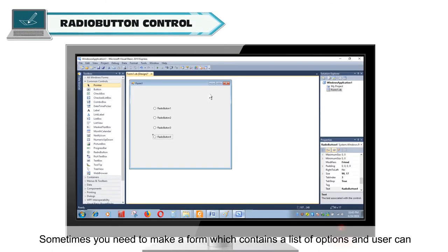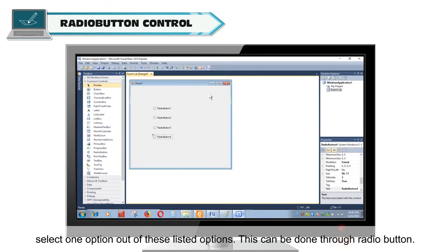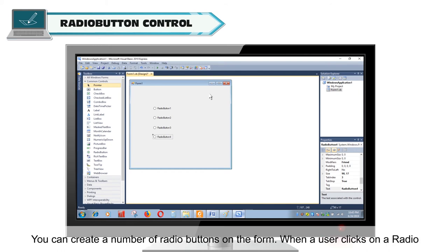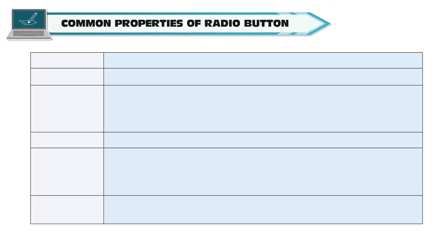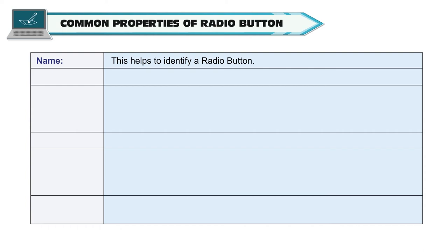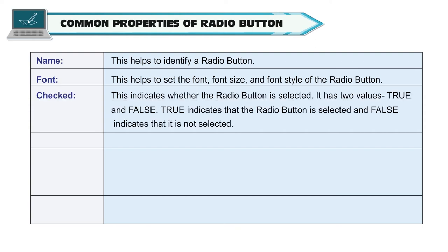Radio Button Control. Sometimes you need to make a form which contains a list of options and the user can select one option out of these listed options — this can be done through Radio Button. You can create a number of Radio Buttons on the form; when a user clicks on a Radio Button, it becomes checked and all other Radio Buttons become unchecked. The common properties of Radio Button are: Name, Font, Checked (True/False), and Text, which holds the text displayed for the Radio Button.